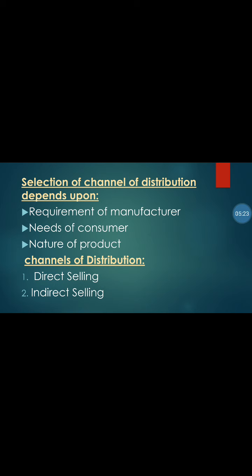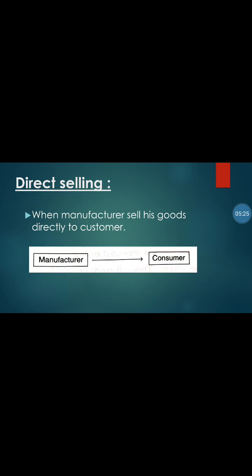Channels of distribution are classified into two types: first is direct selling, and second is indirect selling. Direct selling means, as the name suggests, when the manufacturer sells his goods directly to the consumer without any intermediary, it is called direct selling.